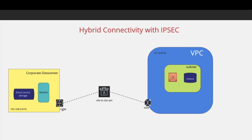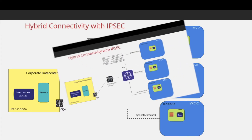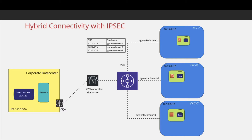The client router or corporate data center router is known as the customer gateway. You can establish a site-to-site SSL VPN between the customer gateway in your corporate data center and the Amazon VPC. If you have more than one VPC, you connect all the VPCs to a transit gateway and establish VPN connectivity between the customer gateway and the transit gateway. Remember, the route table must be updated — for example, 10.1.0.0 pointing to VPC A has transit gateway attachment one reflected in the route table.